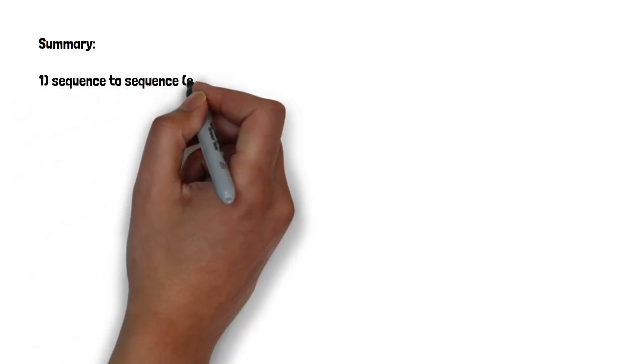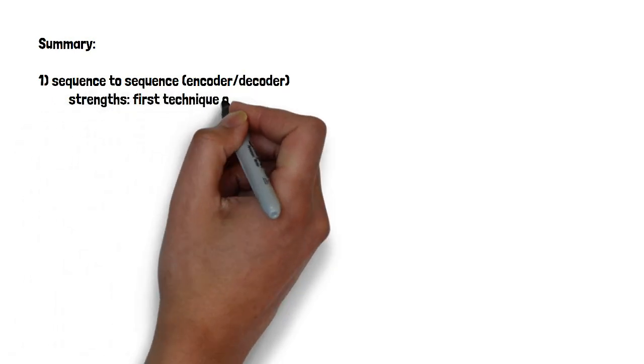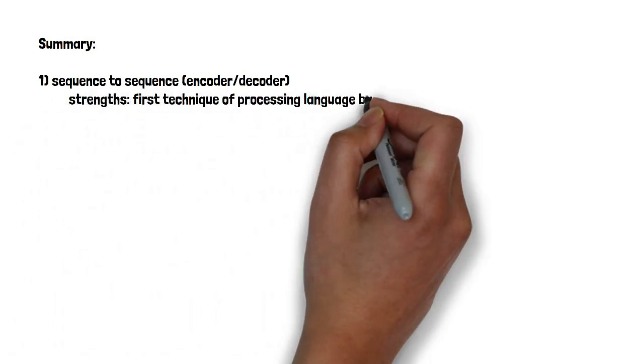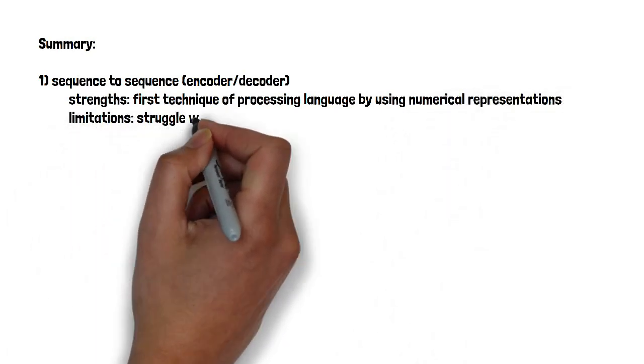With transformers, Alex's machine achieved its goal of understanding and generating stories — a testament to the remarkable progress in NLP and the potential that lies within generative AI. Now let's go through a quick summary. We began with the sequence-to-sequence architecture, which involved an encoder and a decoder. However, this model had limitations, struggling with long sequences, context capture, and generic responses.